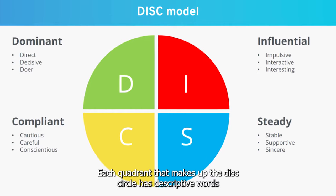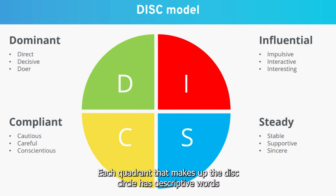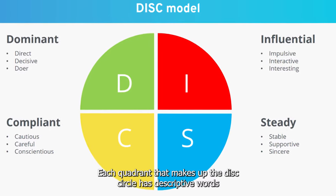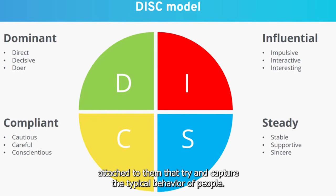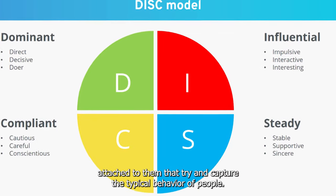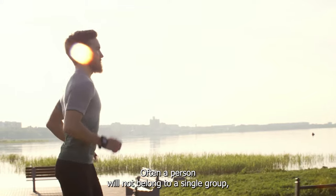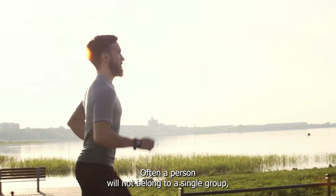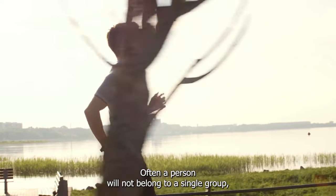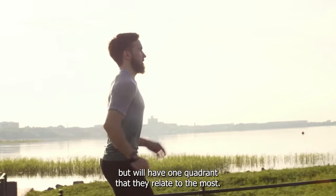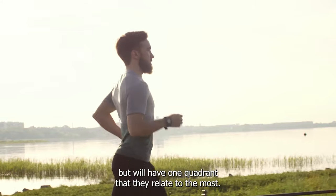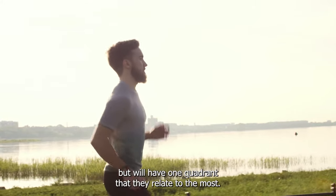Each quadrant that makes up the DISC circle has descriptive words attached to them that try and capture the typical behavior of people. Often, a person will not belong to a single group but will have one quadrant that they relate to the most.